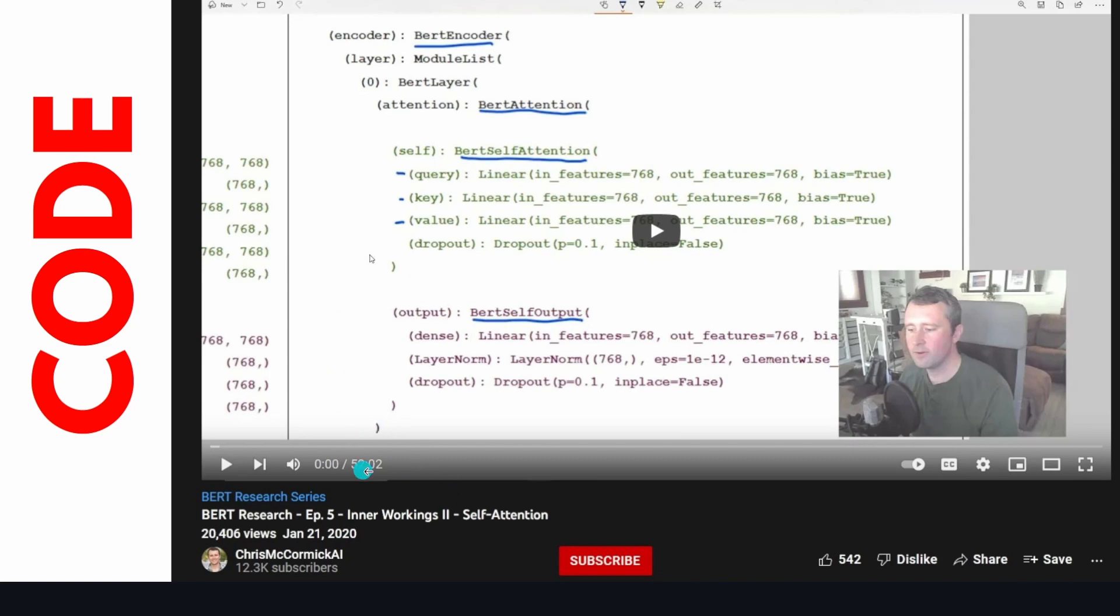As you can see here, this is Episode 5, Inner Workings Part 2, Self-Attention. He has more than 50 minutes where he's trying to explain self-attention. I like this presentation because it's close to the code and you can see absolutely authentic how he's trying to understand, how he's fighting with his understanding, what he imagines when he sees this line of code, when he reads the research paper. A very intuitive approach. If you are looking for a code-based approach, this is the video I would recommend to you.